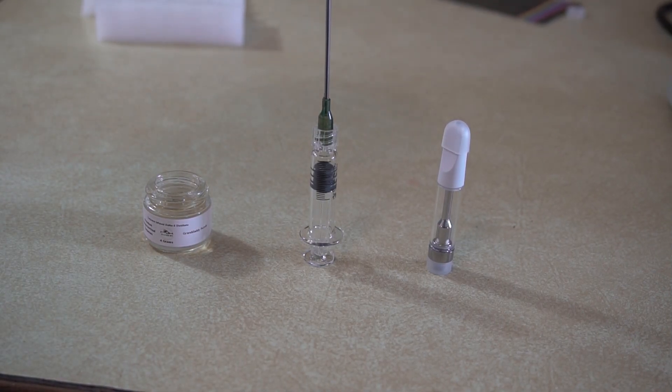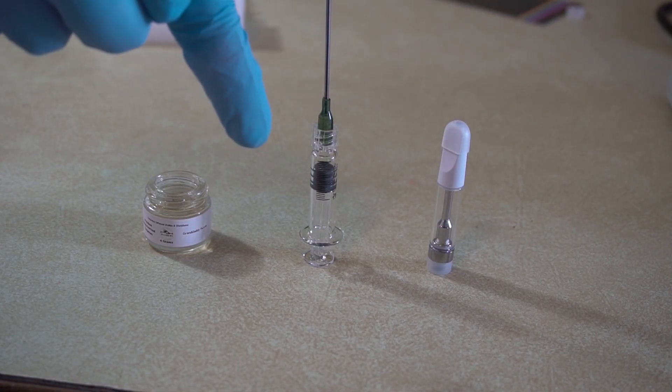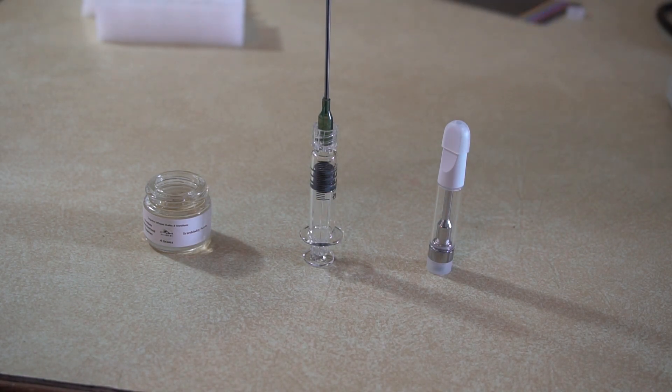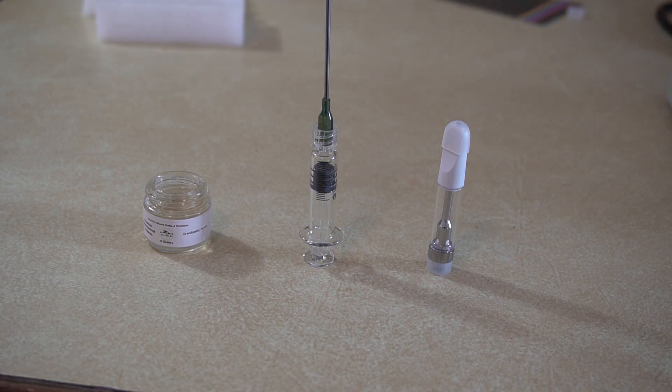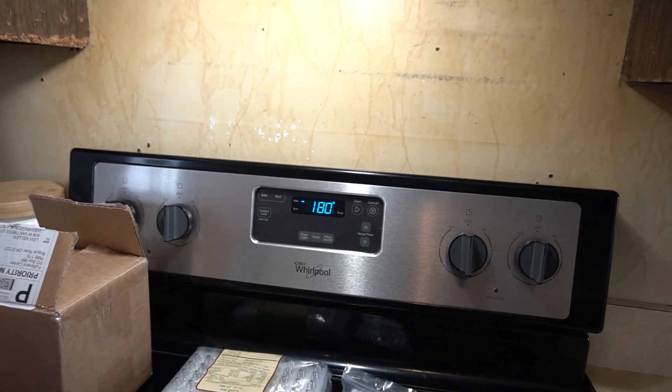First off we're going to need our three essential items here: raw distillate, a syringe, and a C cell cartridge or any cartridge you prefer to use. The biggest thing here is everything is going to be heated.